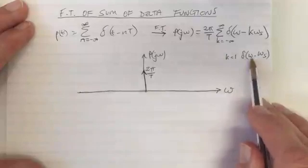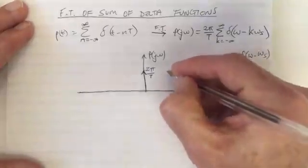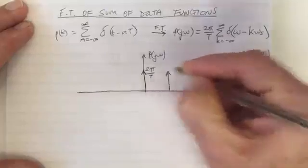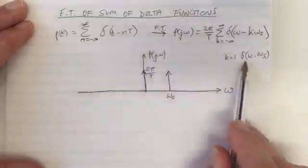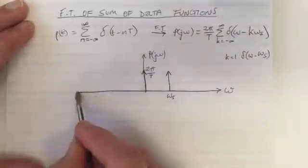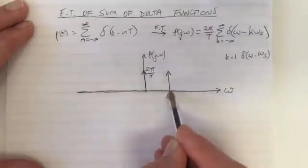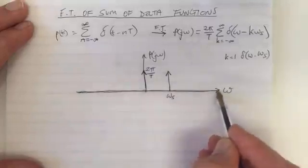So this is a delta function which exists at the place where omega equals omega_s. So this is a delta function here at ω_s, and that function is zero for all values of omega except for at ω_s.